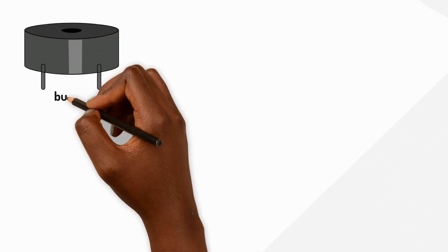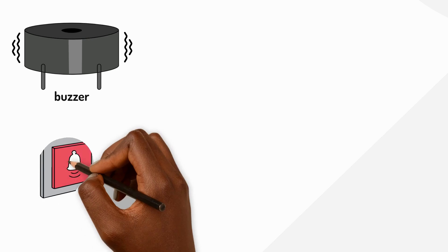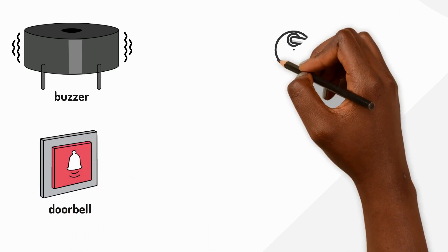A buzzer makes a sound when electricity flows through it. Inside, electricity makes a small piece of metal vibrate really quickly and this creates the buzzing noise. You'll find buzzers in doorbells and game shows.